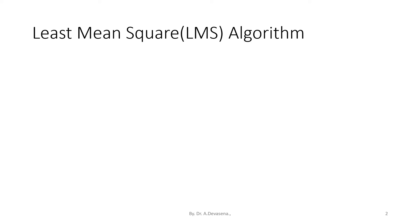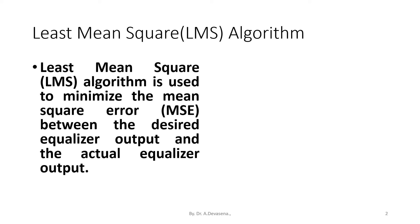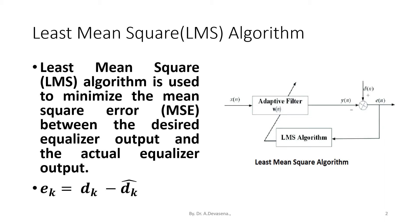Least Mean Square algorithm is used to minimize the mean square error between the desired equalizer output and the actual equalizer output. Here is a representation for the Least Mean Square algorithm: e_k = d_k - d̂_k